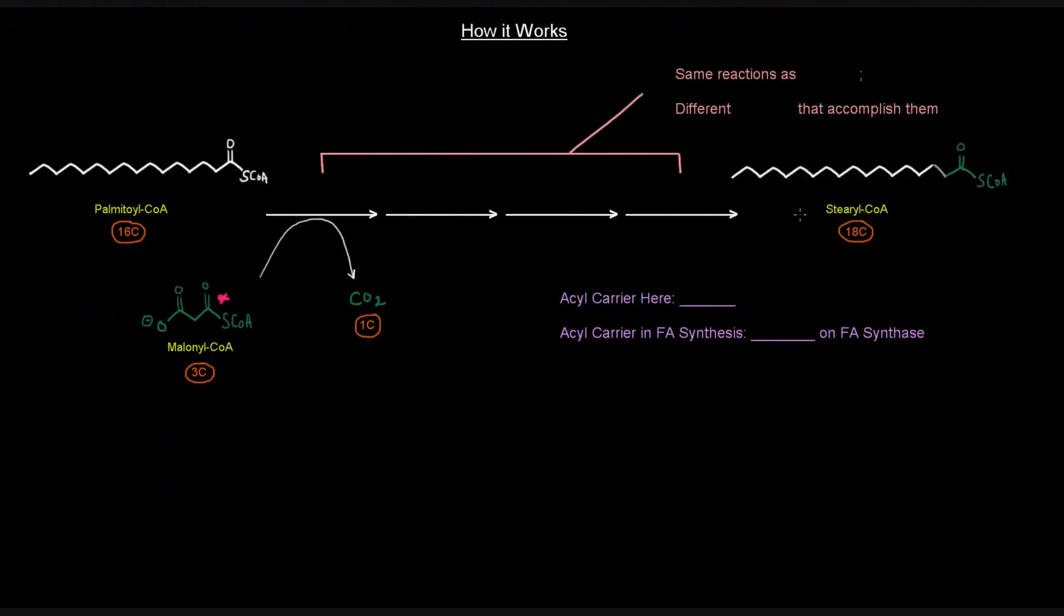Okay. So how does it work? Well, let's imagine that we have palmitate CoA, which we made and it's a 16 carbon fatty acyl CoA and we can show the numbers here. There's 16 carbons there. Let's say we want to lengthen it to stearate CoA, which is two carbons longer at 18 carbons. What do we need to do? Well, we need to add a two carbon unit.